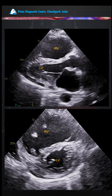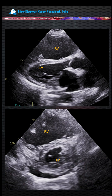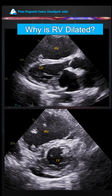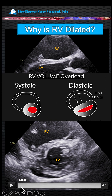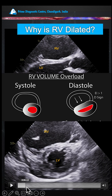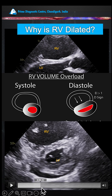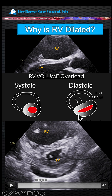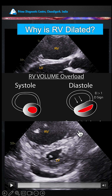Sharing a new concept: RV dilatation — what is the cause? You can follow this rule on screening: in systole, the LV forms a full circle, meaning LV pressure is greater than RV pressure. But in diastole, you see a flattening, meaning RV pressure during diastole becomes higher, flattening the septum and making it D-shaped.